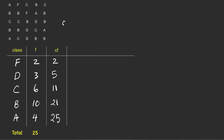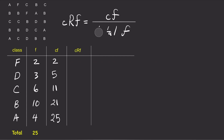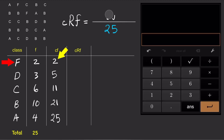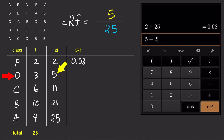The cumulative relative frequency can be calculated by simply taking the cumulative frequency for each class and dividing it by the total frequency. So for the first class, F, the cumulative relative frequency is 2 divided by 25 equals 0.08. And for the second class, D, the cumulative relative frequency is 5 divided by 25 equals 0.20.